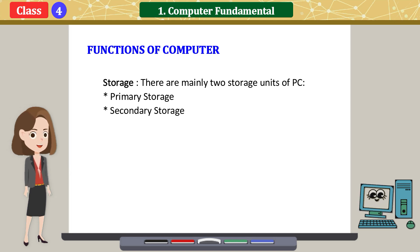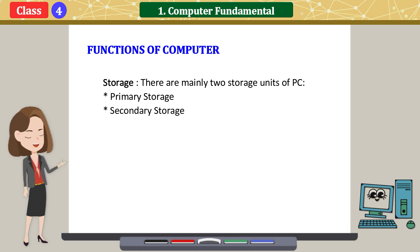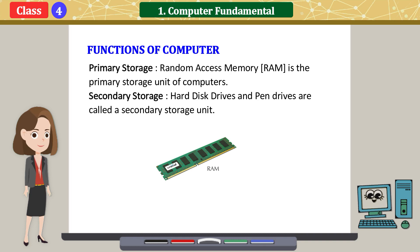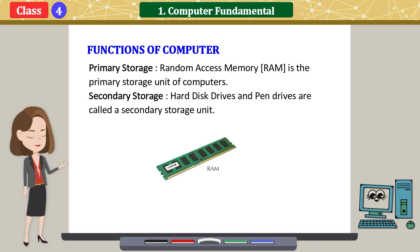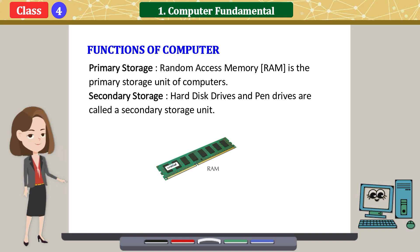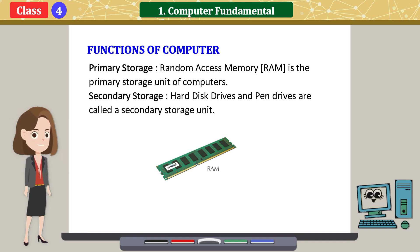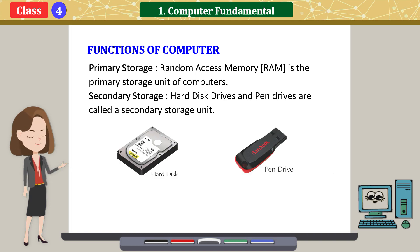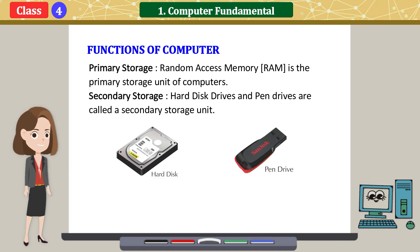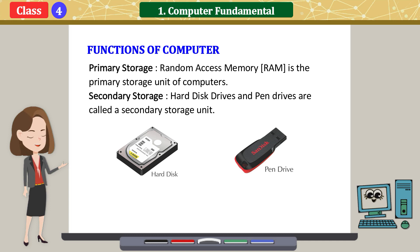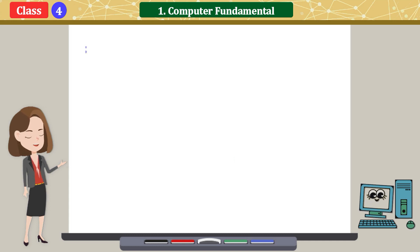Storage: there are mainly two storage units of a PC — primary storage and secondary storage. Primary storage: random access memory (RAM) is the primary storage unit of computers. Secondary storage: hard disk drives and pen drives are called secondary storage units.